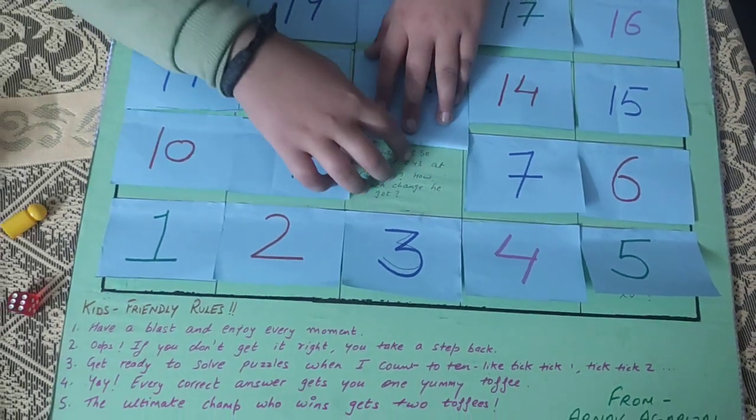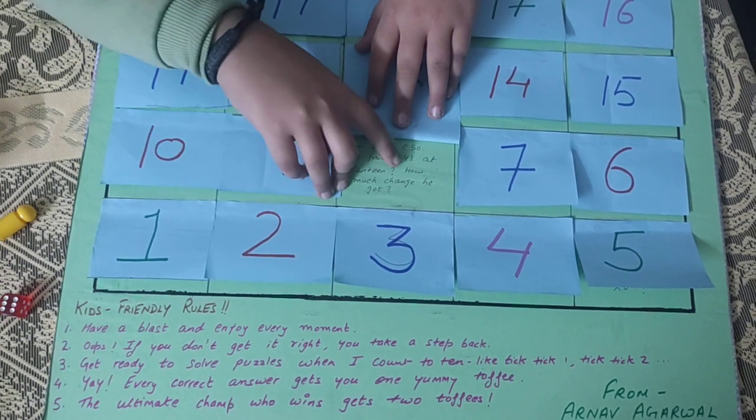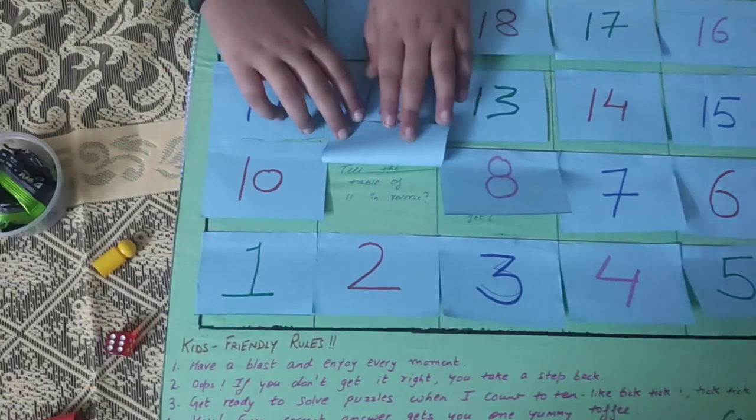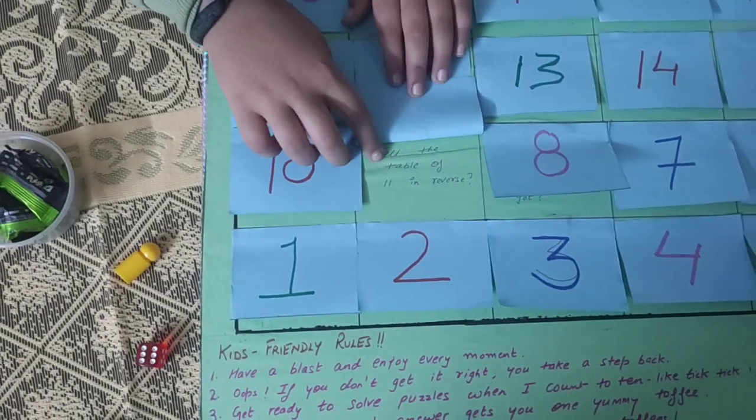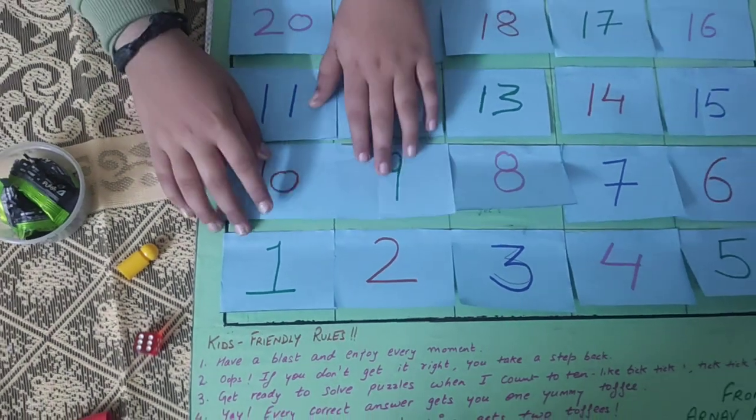Ram had 50 rupees. He paid 43 to the canteen. How much change he got? 9. Tell the table of 11 in reverse. Interesting.